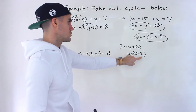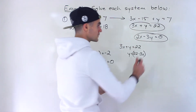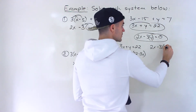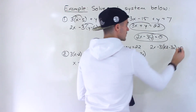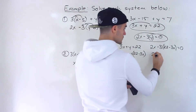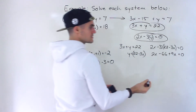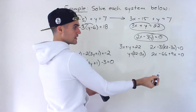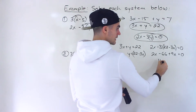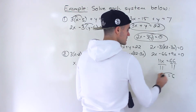So y equals 22 minus 3x. We got that from the first equation. Now we plug it in for y in the second equation: 2x minus 3 times (22 minus 3x) equals 0. Expanding: 2x minus 66 plus 9x equals 0, since negative 3 times negative 3x is positive 9x. Bringing the negative 66 over: 2x plus 9x gives 11x equals 66. Dividing both sides by 11, x is 6.